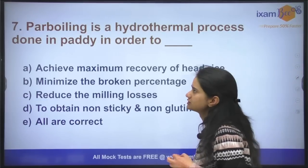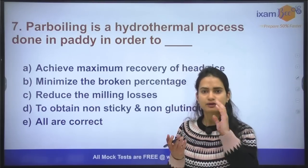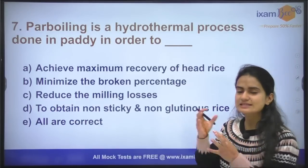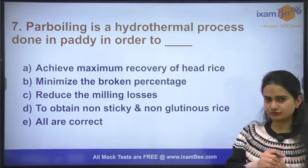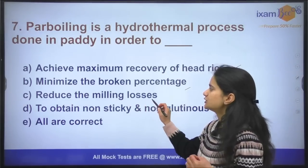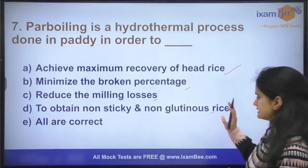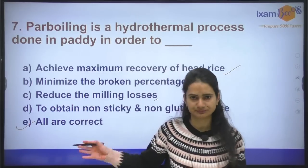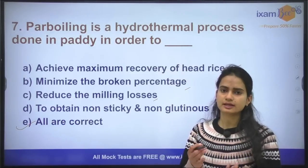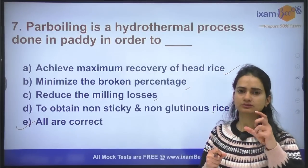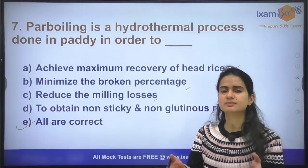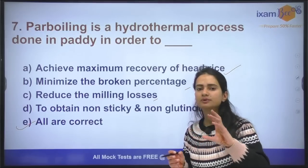Question number seven: parboiling is one of the hydrothermal processes. What is the objective of milling in rice after parboiling? Is it to achieve maximum recovery of head rice, to minimize broken percentage, to reduce milling losses, or to obtain non-sticky non-glutinous rice? The answer is all of them. In parboiling, the rice is steamed and heated, so vitamins present in the husk migrate to the kernel inside, and the broken percentage is also reduced.